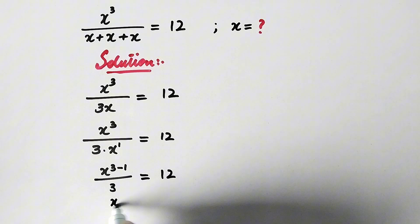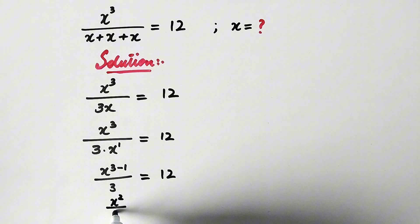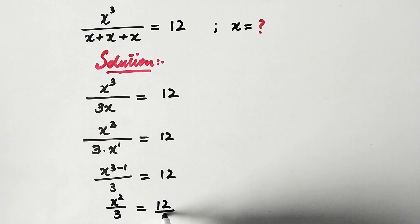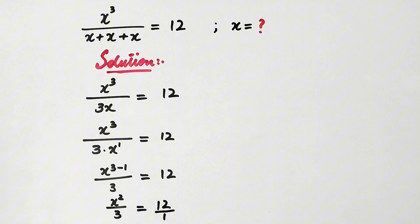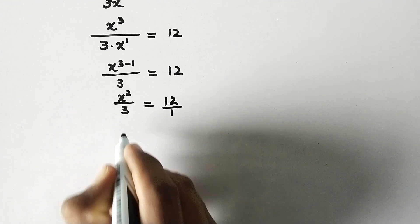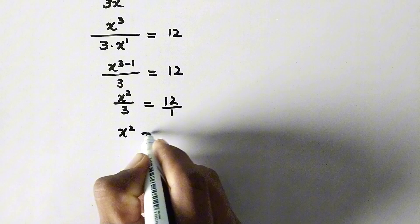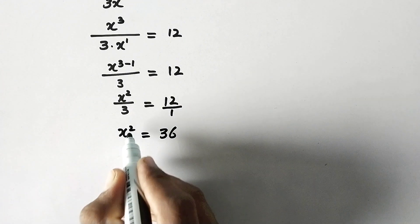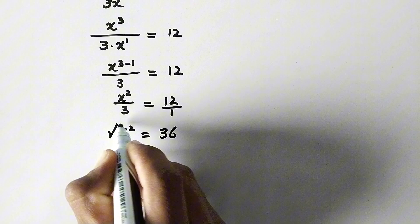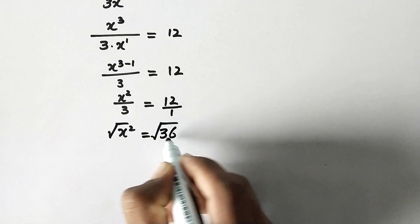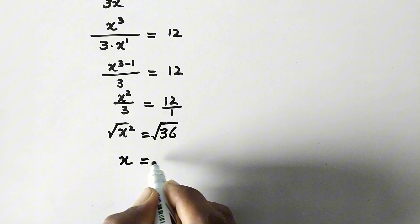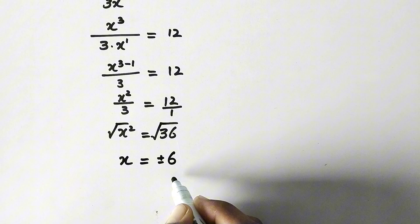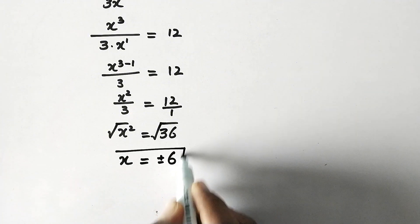So now x to the power 2 over 3 is equal to 12. By cross multiplying, x squared is equal to 12 times 3, which is equal to 36. And now to eliminate this square we will take the square root on both sides. Therefore x will be equal to plus or minus 6, and that is the value of x.